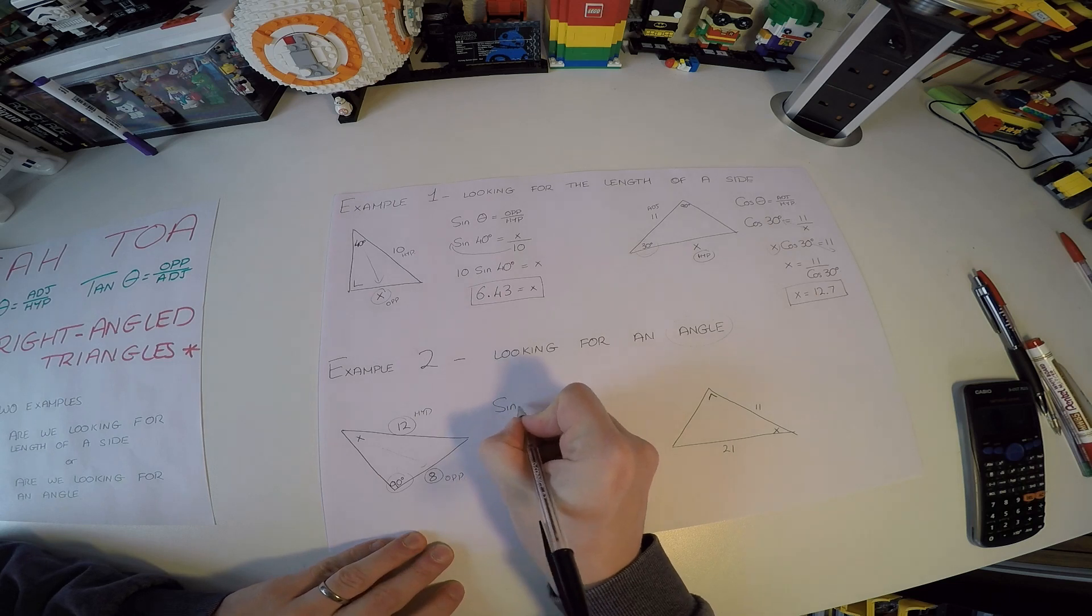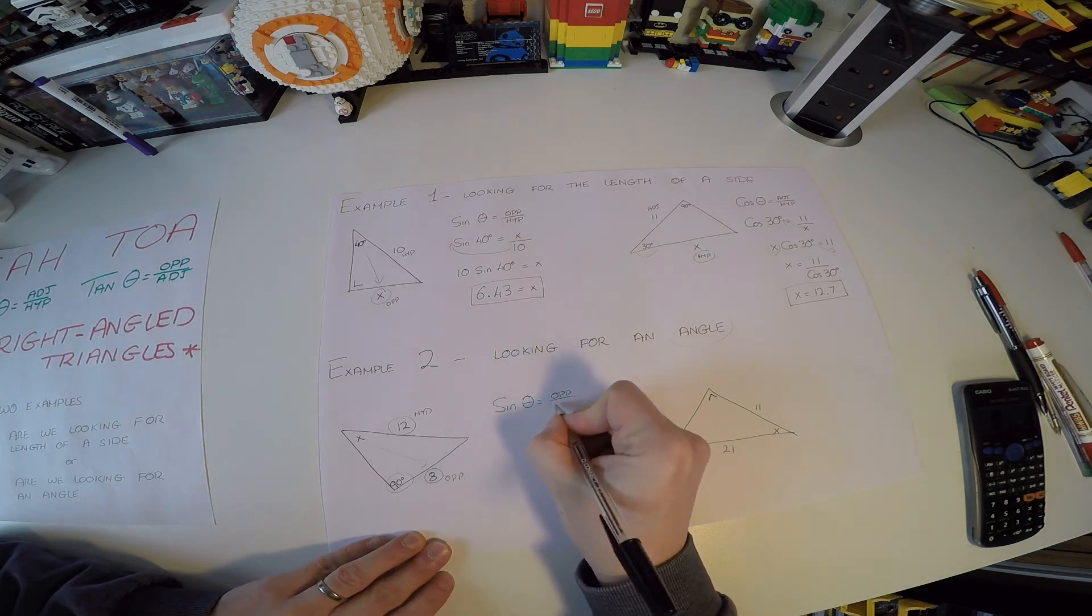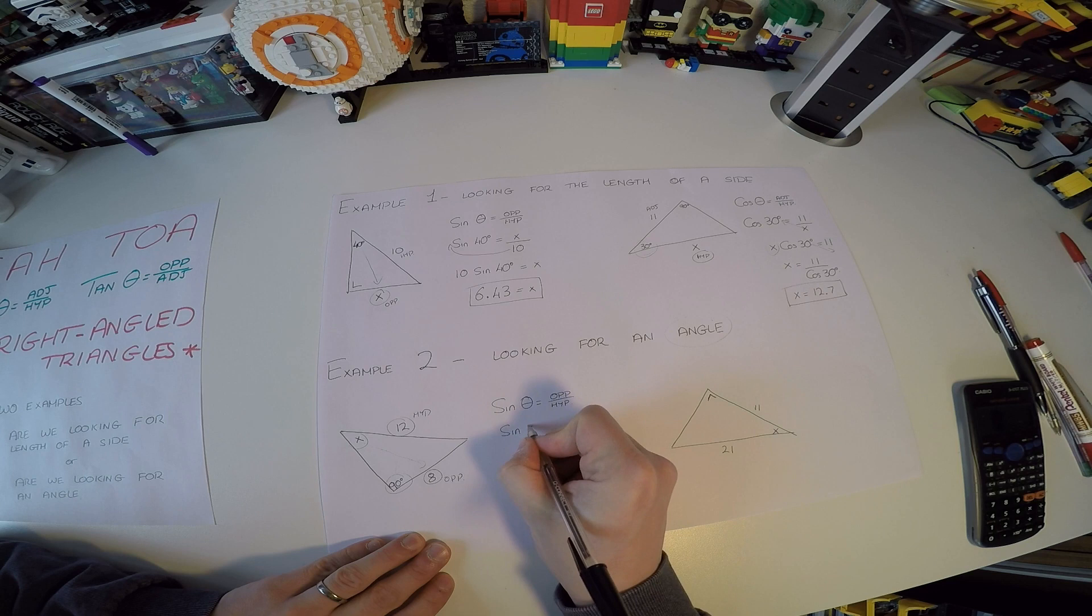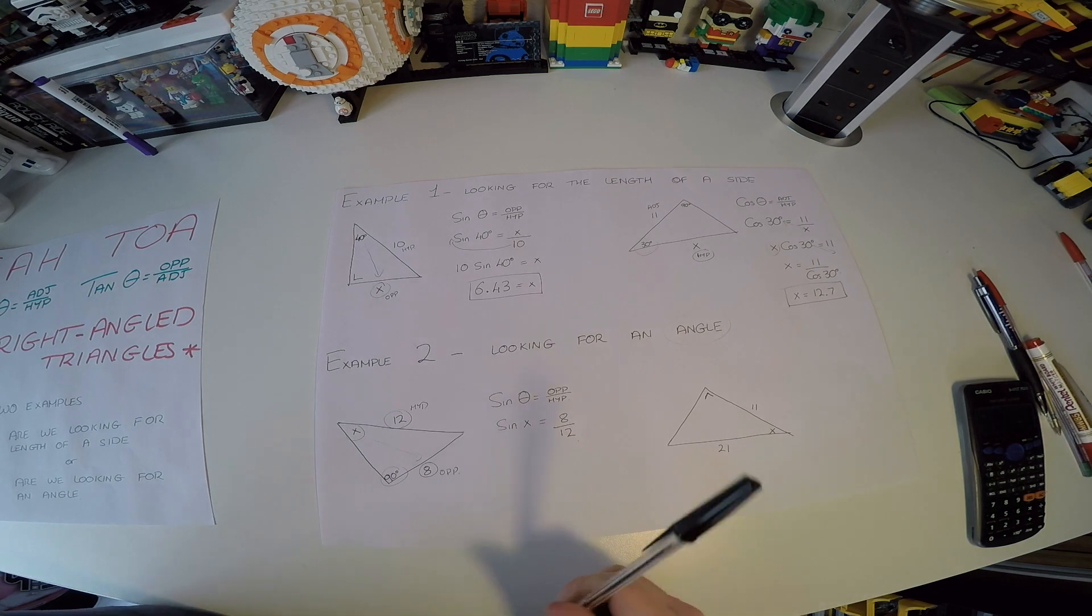So the sine of some angle is equal to opposite over hypotenuse. So what are we talking about? Well, X is the angle, so we have to replace theta by X. The opposite is 8, the hypotenuse is 12. Now, here's the big step that you have to do.